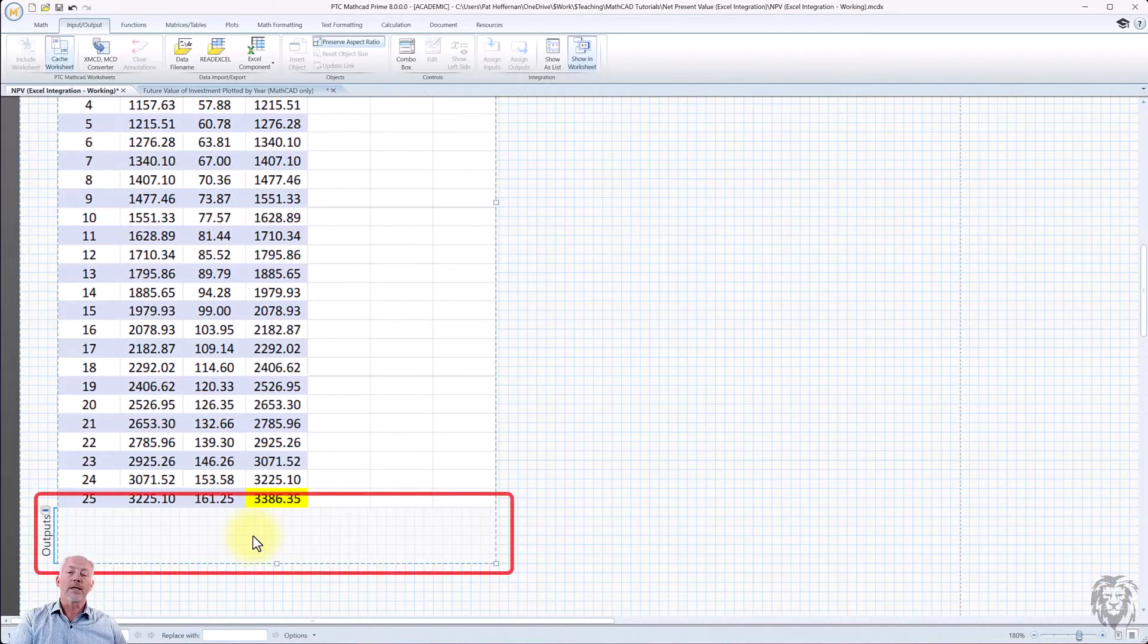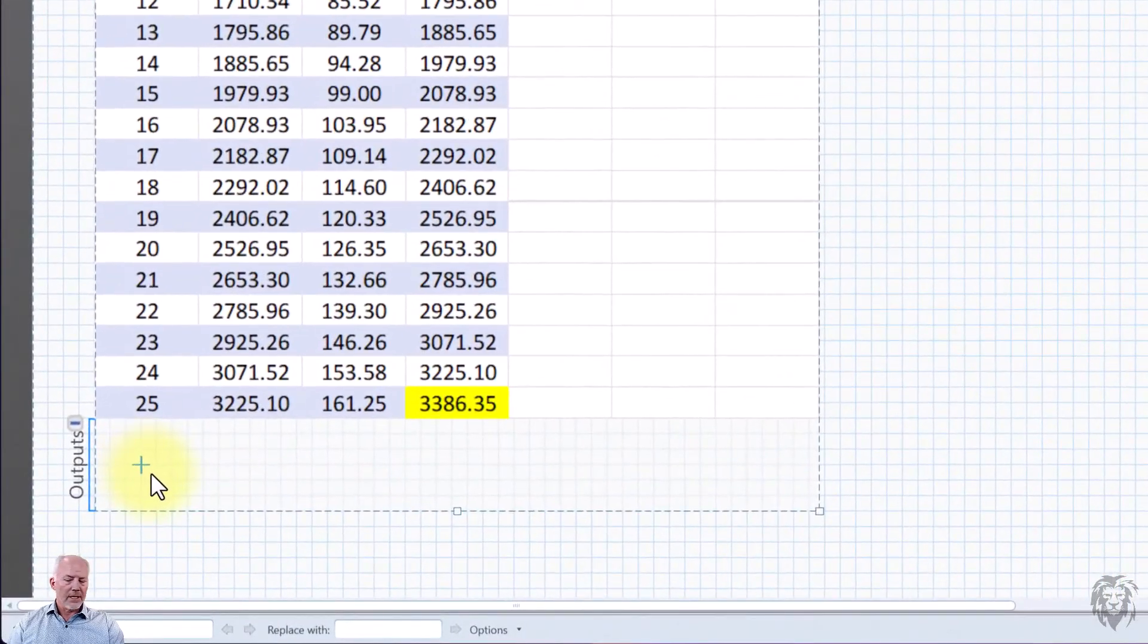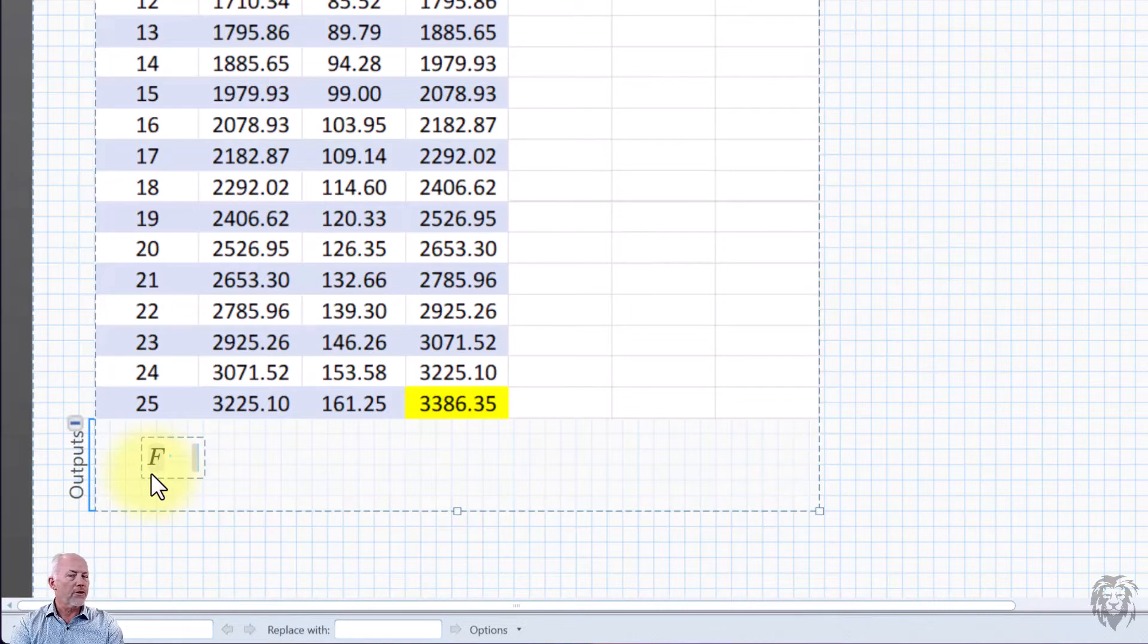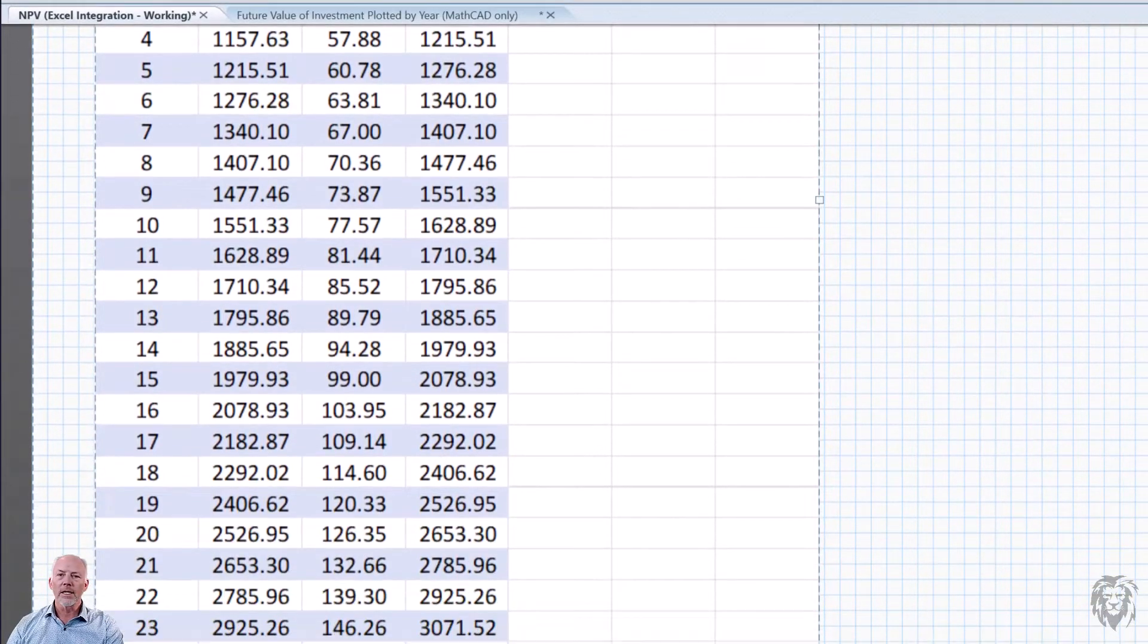So now typically you wouldn't leave them there. You want to bring them back out of the spreadsheet. So what we need to do is to have an output variable, which is going to allow us to assign that data values, if you will, in the spreadsheet to an array back in our MathCAD sheet. And so we go down to the output section and we're just going to say F in this case, and we're going to create an array of future values, and we're going to set it equal to, sorry, just Excel component output, Excel component.